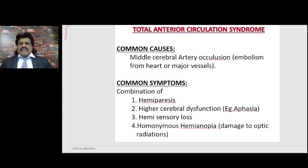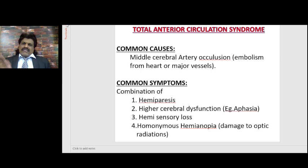So if an embolus lodges into the superior division of the left middle cerebral artery, it will result in Broca's aphasia. Whereas if an embolus lodges into the inferior division of the middle cerebral artery, it will result in Wernicke's aphasia. There would also be hemi-sensory loss because the middle cerebral artery also supplies the parietal lobe, where the sensory tracts terminate at the post-central gyrus.